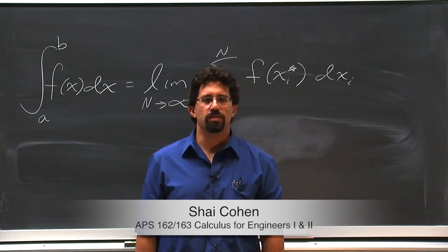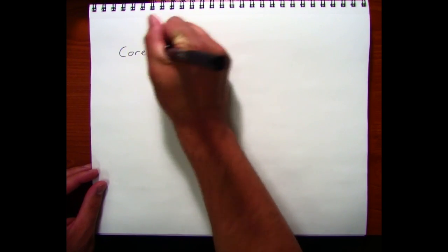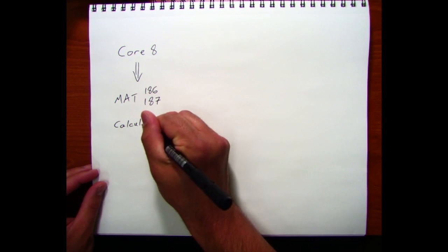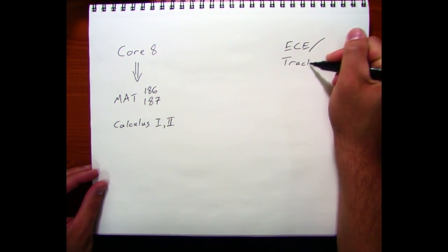Every engineering student has to take two first-year calculus courses. Those in the Core 8 take MAT 186 and 187, while those in ECE or Track 1 have MAT 196 and 197.